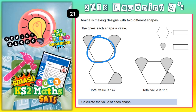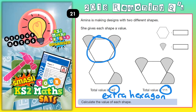So the extra hexagon must be the extra bit that takes it from 111 up to 147. So if we find the difference between 147 and 111, that will be what the extra hexagon is worth. So let's work that out: 147 take away 111. 7 take away 1 is 6, 4 take away 1 is 3, and 1 take away 1 is nothing.